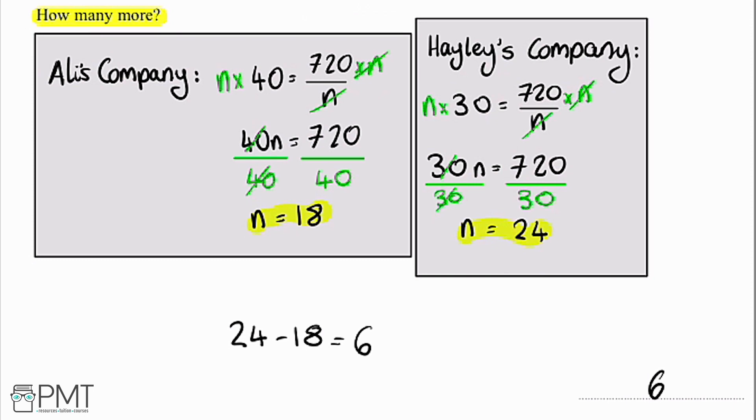So we're going to get our first mark for doing this working here, working out the number of workers that each company will use. Second mark for doing the difference, and the third mark for the correct answer of 6.